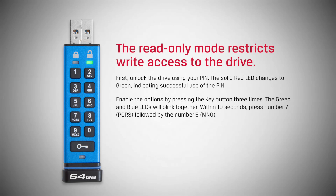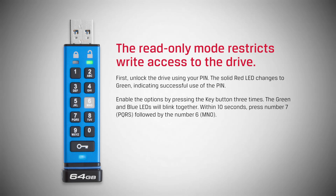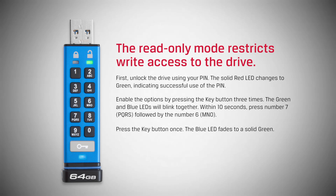Enable the options by pressing the key button three times. The green and blue LEDs will blink together. Within ten seconds, press number seven, followed by the number six. Then press the key button once. The blue LED fades to a solid green.